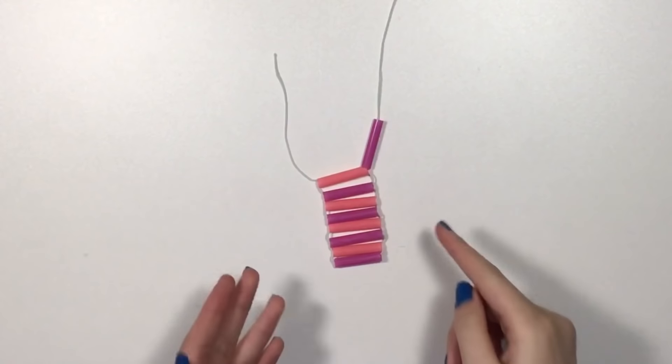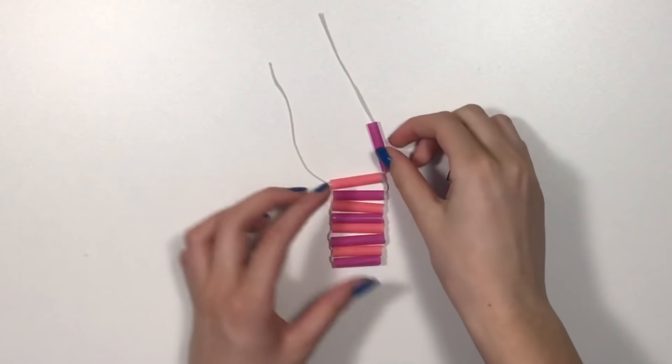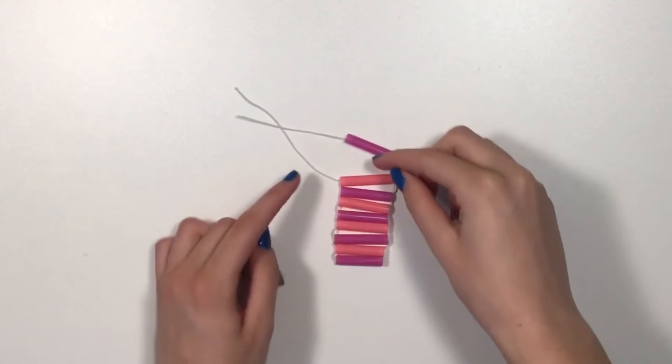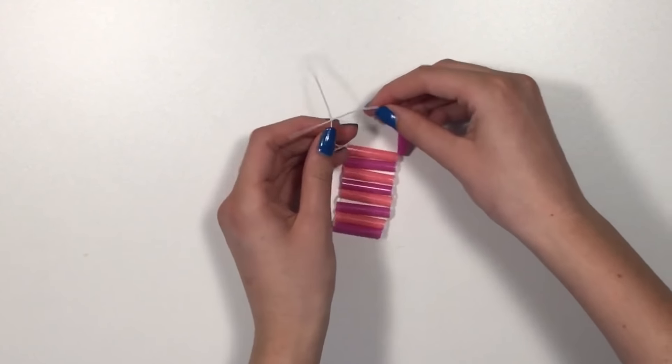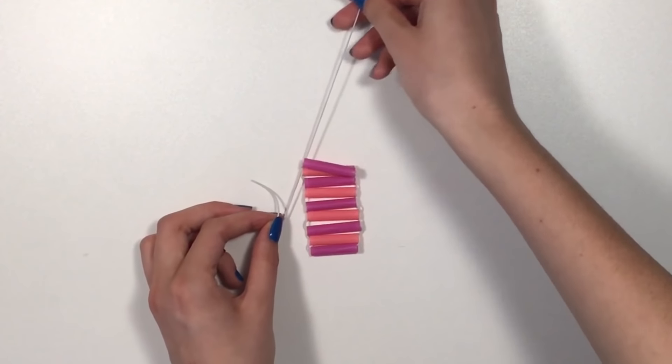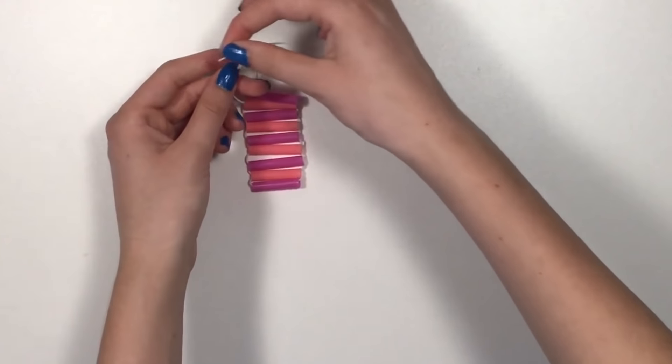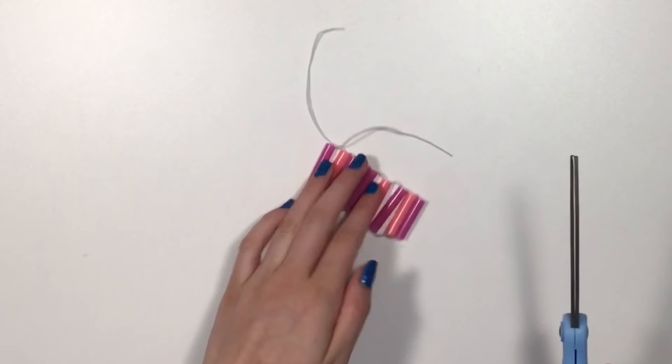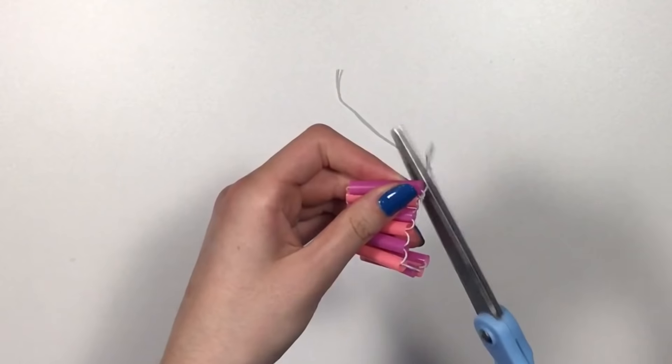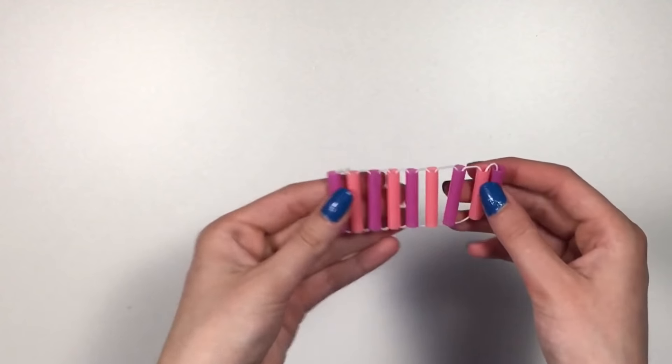And now once you get to the end right here, you're gonna fold it over and then don't slide this one through. You're gonna fold it over and tie a knot right here. And then I'm gonna double knot it just like that. Once you've double knotted it, you can cut off the excess.